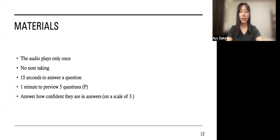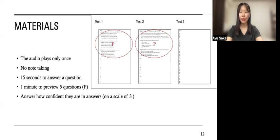In this experiment, participants could listen to audio only once and they couldn't take notes while listening. They answered all questions in 15 seconds. Participants also answered how confident they are in their answers on a scale of three, so that I can omit the answers that were answered correctly by chance. In P format, they could preview questions for one minute.